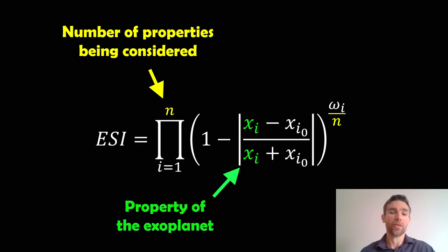So let's go back to this equation. How do we calculate it? Well, the n we have there is the number of properties that you're going to consider. So let's say you just do radius and stellar flux, then n is going to be 2. If you want to add in mass or something else, it would be 3. You've then got your Xi. That's going to be your property of your exoplanet. So we've got the number of properties being considered. We've then got Xi, where i would be the property being considered at that point.